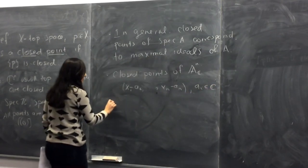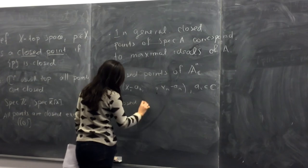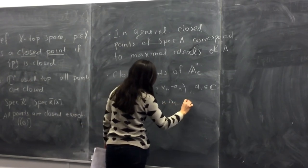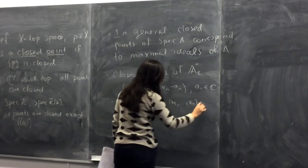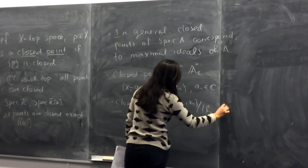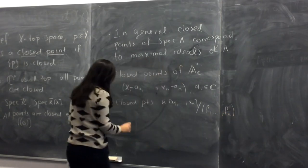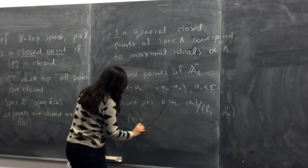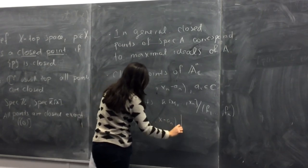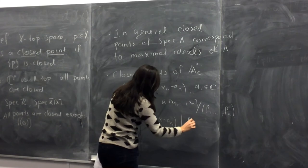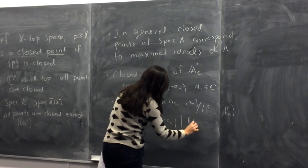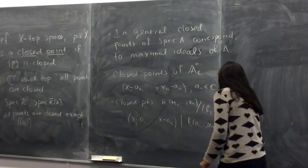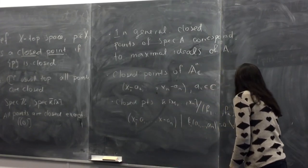If we think of closed points of Spec(k[x₁,...,xₙ]), we need k to be algebraically closed and a finitely generated k-algebra. Then the closed points correspond to tuples (a₁,...,aₙ) in 𝔸ⁿ such that fᵢ(a₁,...,aₙ) = 0 for all i = 1,...,k.